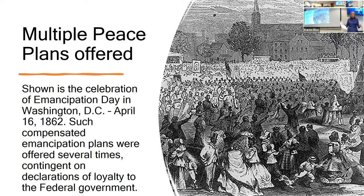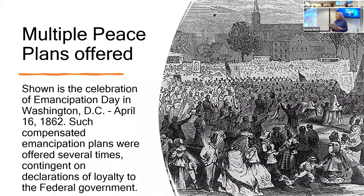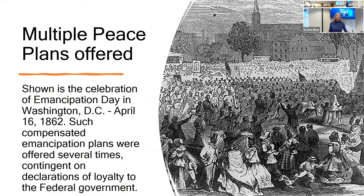Talking about his overall view of the rebellion and why it had to be suppressed — in the course of things, he is constantly offering peace plans. He is totally convinced that it would be cheaper, less costly in life and economy and to the future of the nation, if there was some kind of compensated emancipation plan. It's offered several times, always contingent on declarations of loyalty to the federal government. And this is emancipation day in Washington, D.C., coming up soon.